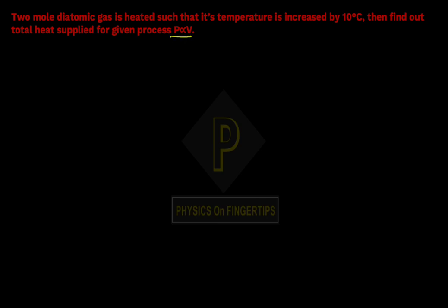The process given has change in temperature delta T = 10 degrees Celsius. We need to find how much heat is supplied.